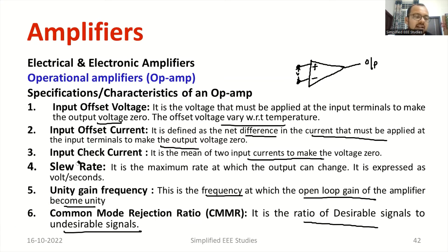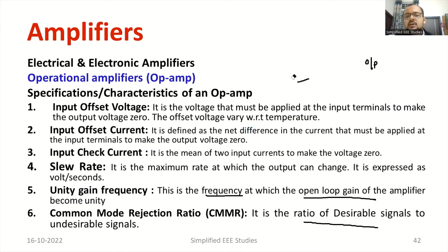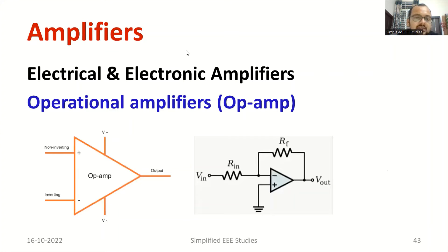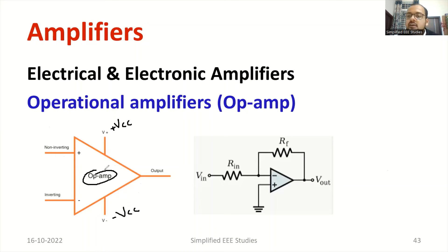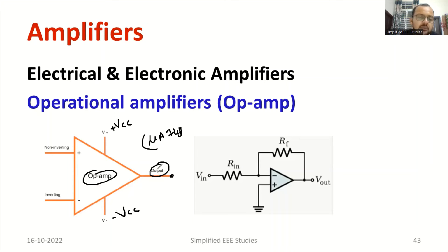Based on these characteristics, you can define the ideal characteristics of an op-amp. Before that, let me show you the symbol of an operational amplifier. This is your operational amplifier. It has plus VCC and minus VCC supply connections. Refer to the datasheet — for example, muA741 — to understand the pin details. The op-amp has one output terminal and two input terminals: one is called the non-inverting terminal, and the other is called the inverting terminal.